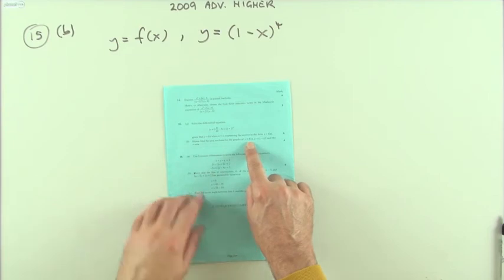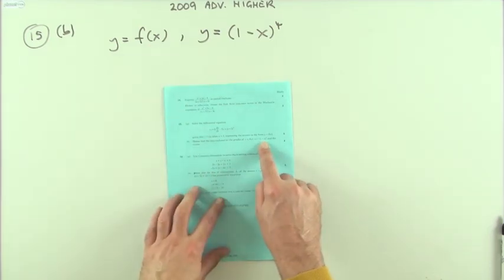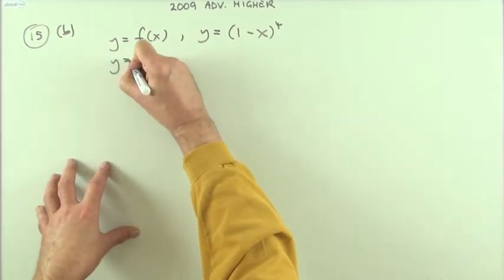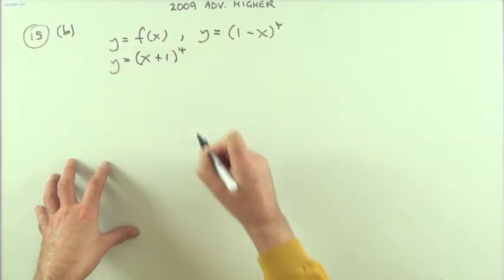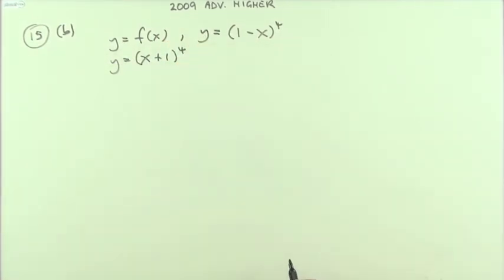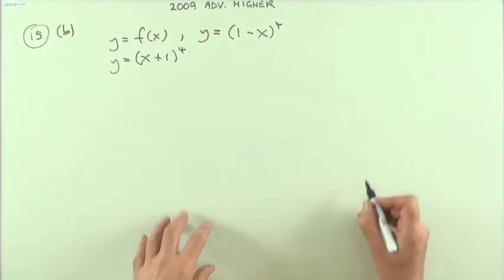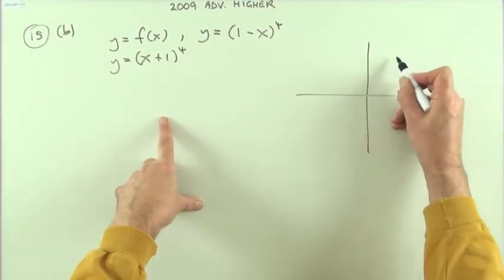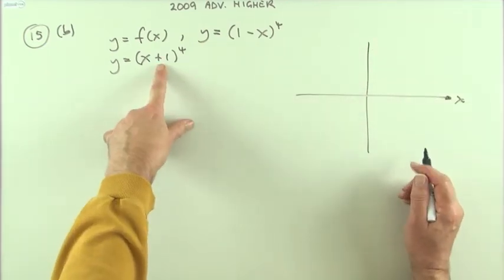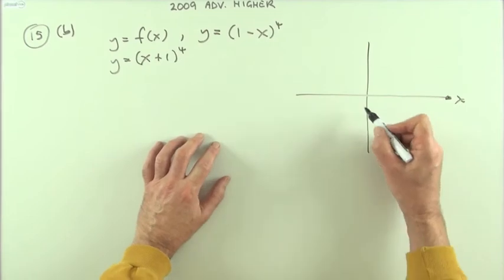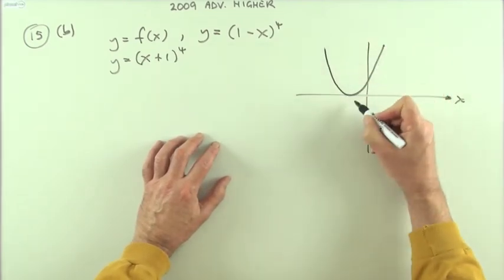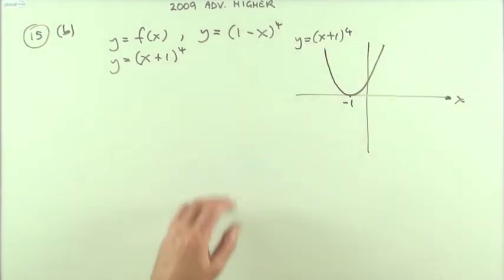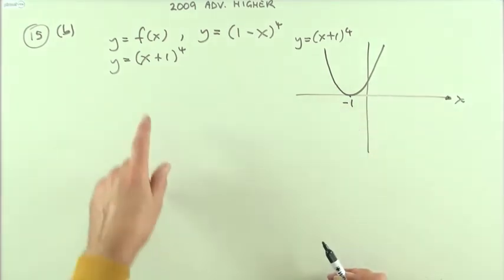Part b: find the area enclosed by the graphs of the function just found — y = (x+1)^4 — and y = 1 minus x to the power 4, and the x-axis. What would they look like? Both are just transformations of the x^4 graph. A quick sketch: x^4 shifted back 1 gives (x+1)^4, so that graph should be shifted back 1 to negative 1.